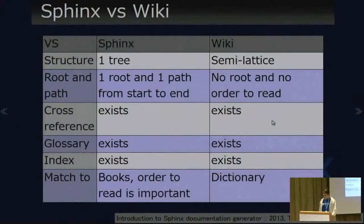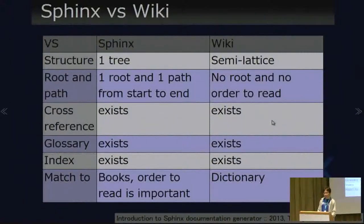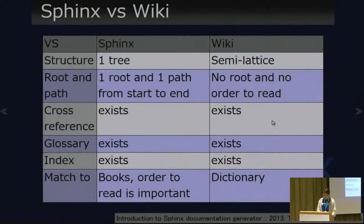Sphinx versus Wiki: Sphinx and wiki text markup syntax is very similar, but Sphinx structure is one tree — all files joined in one tree. Wiki structure is not a tree structure; it's a semi-lattice structure. Sphinx has one root and one path from start to end. Wiki has no root and no order to read. Cross-references, glossary, and index also exist in Sphinx. Sphinx matches books where reading order is important; wiki is a weak match to a dictionary.